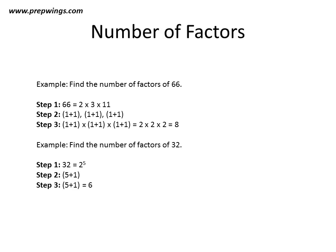So basically, we follow these three steps to quickly find the number of factors of any given number. Prime factorization is at the heart of this — first prime factorize the number, then add 1 to all the powers of the prime numbers, and multiply them. Thanks a lot for watching this video.